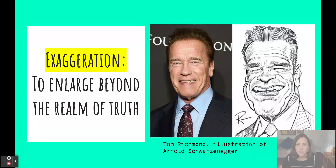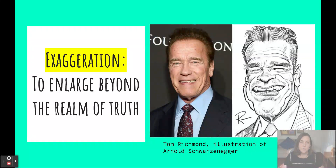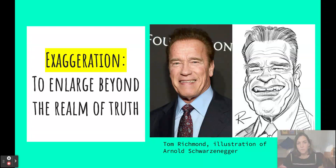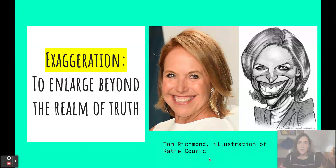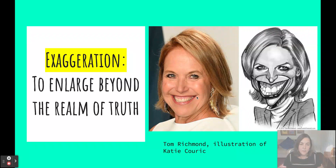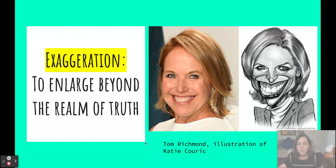The second element of successful caricature is exaggeration — to enlarge beyond the realm of truth. In a caricature of Arnold Schwarzenegger, his chin and mouth are greatly enlarged to emphasize those distinctive features. In a portrait of Katie Couric, a popular news anchor, her large distinctive smile showing a bit of gum is really emphasized. Exaggeration means picking one feature to make larger than life to show the subject's distinguishing characteristics.